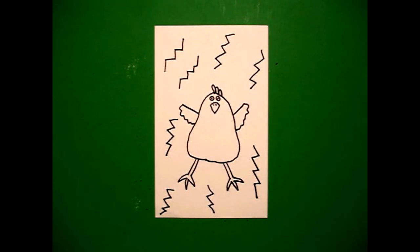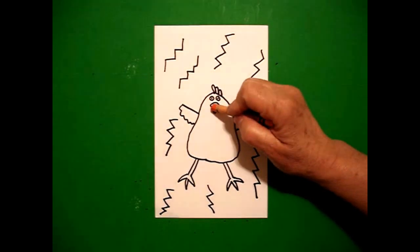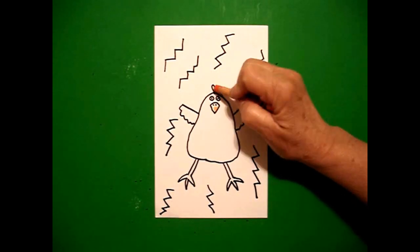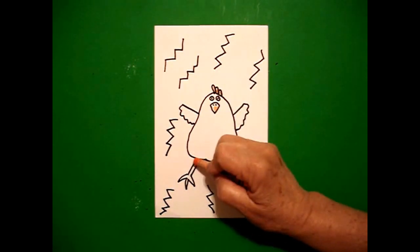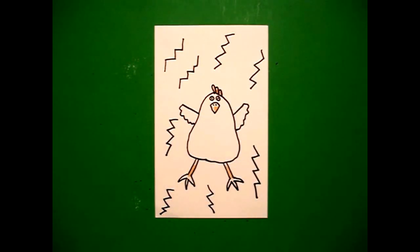Let's see how we're going to color this in. Okay. This is pretty easy to color because all we need is orange for Chicken Little. So you're going to do his comb, his beak, and his feet. Orange.